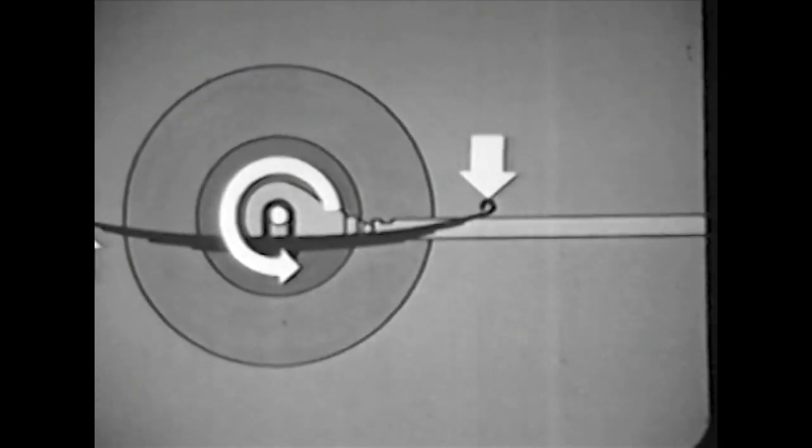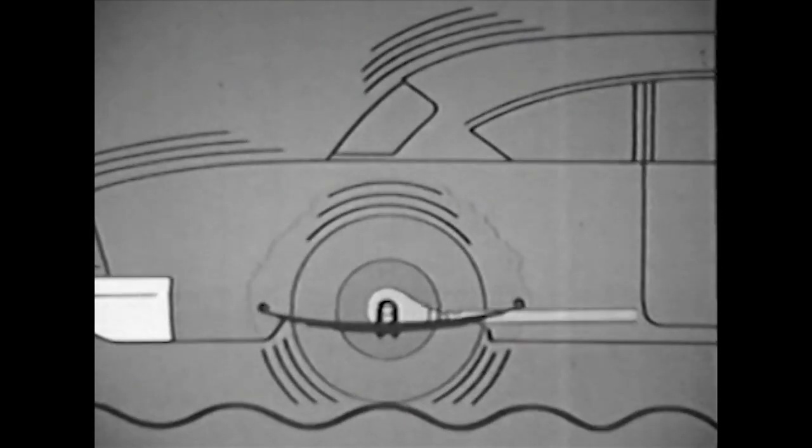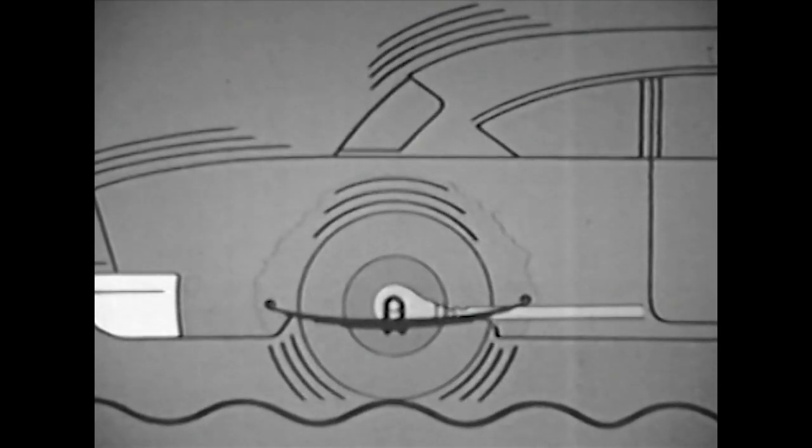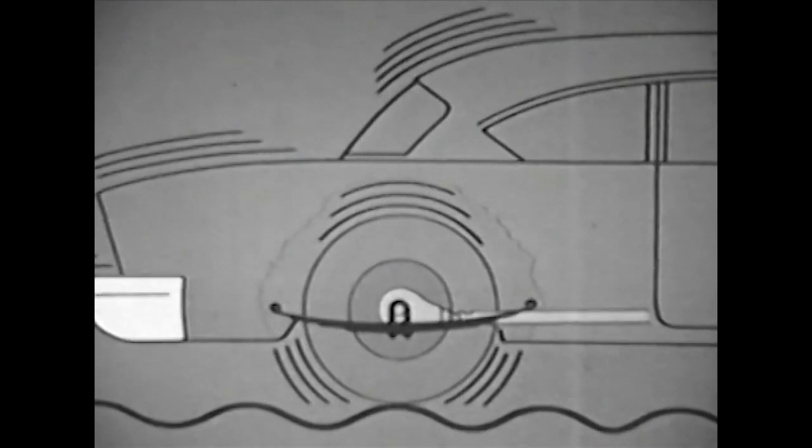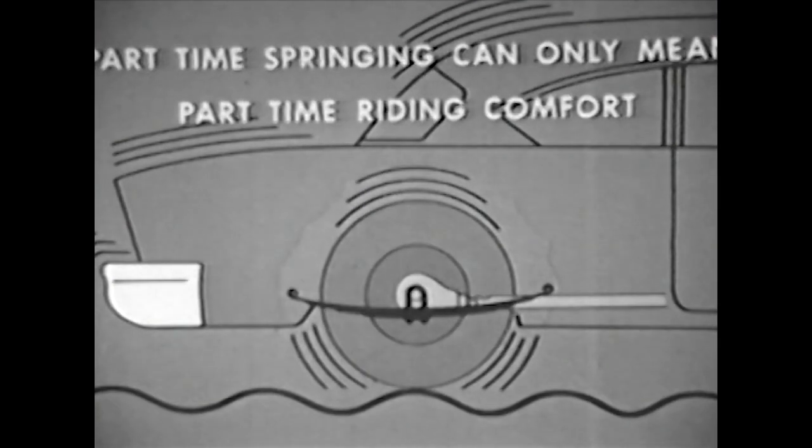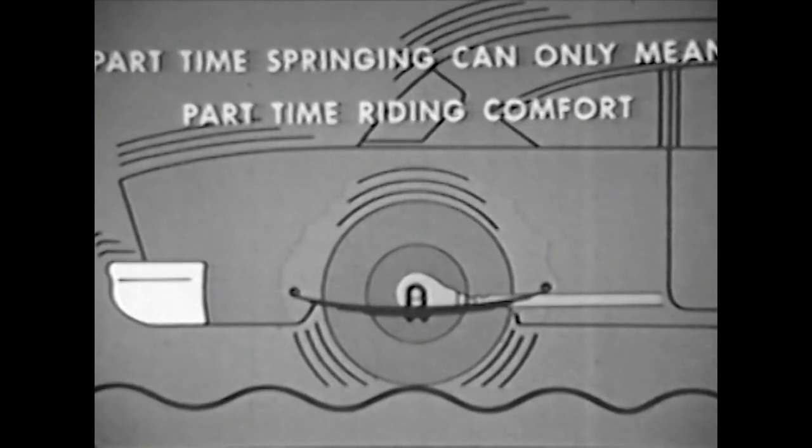Obviously, the basic function of a car's springs is to cushion the ride. If in addition the springs must also prevent axle twist, they have two jobs to do at once, so they can't do either best. Part-time springing can only mean part-time riding comfort. In the Hotchkiss drive, the springs must be stiff and heavy to absorb reaction forces - too stiff for comfort.